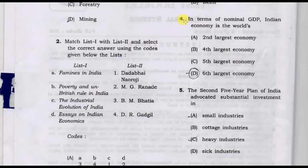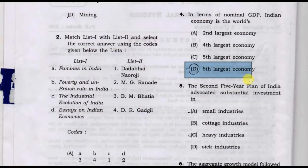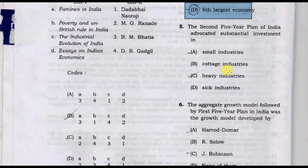In terms of national GDP, the Indian economy is the world's option A: second largest, fourth largest, fifth largest, or sixth largest economy? The correct answer is option D: sixth largest economy.